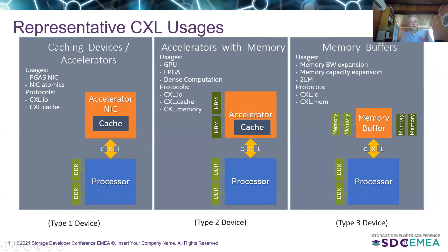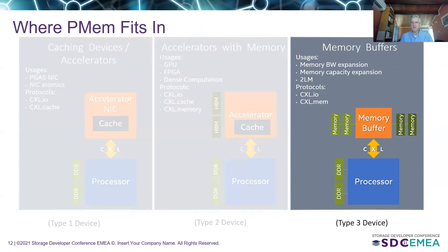In the spec, there are three representative CXL usages referred to as Type 1, Type 2, and Type 3 devices. Type 1 and Type 2 devices are really about different types of accelerators, and CXL is very well-formed to be an accelerator connect point. I'm going to concentrate today on the Type 3 device, labeled memory buffer, which is for expanding the system's main memory by adding CXL Type 3 devices. That fits well with the idea of adding persistent memory to the system. So that's why I'm focusing on Type 3 — that's where persistent memory fits in.